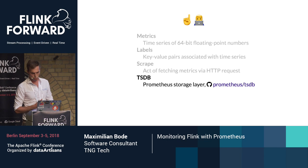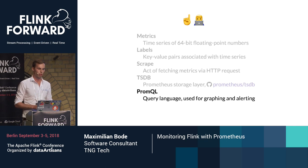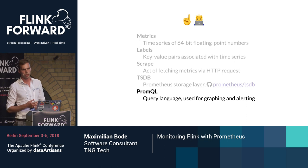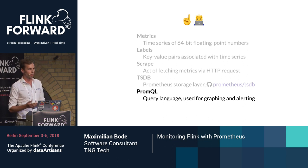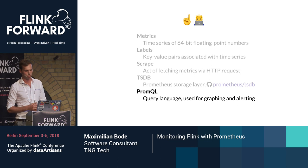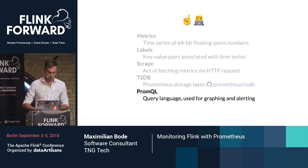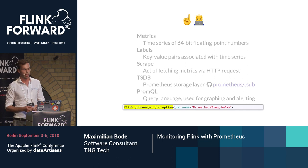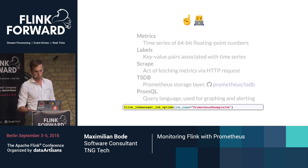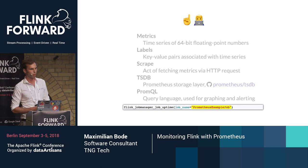Prometheus also has a query language called PromQL. It can be used for two things: graphing, so building dashboards and looking at your data, and also defining automatic rules which can trigger alerts. An example PromQL expression: you have a metric, and then you select parts of it using a label name and a label value. So we can look here at the uptime of all jobs that are called 'prometheus example jobs'.